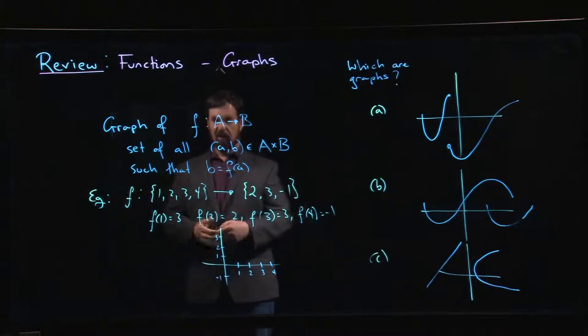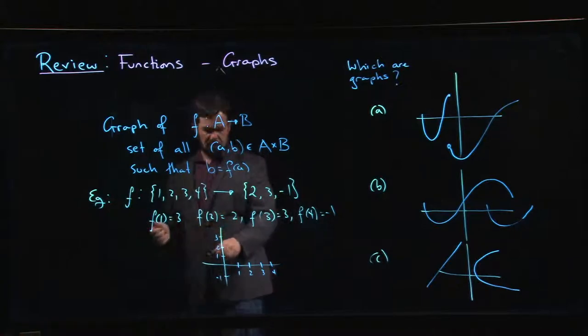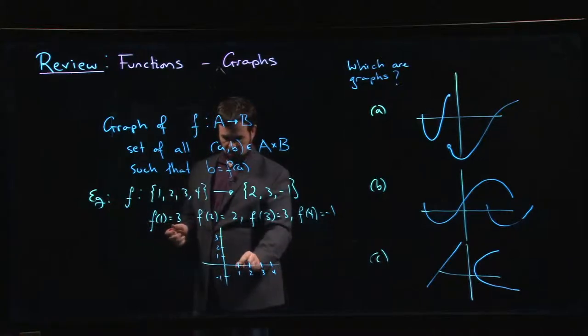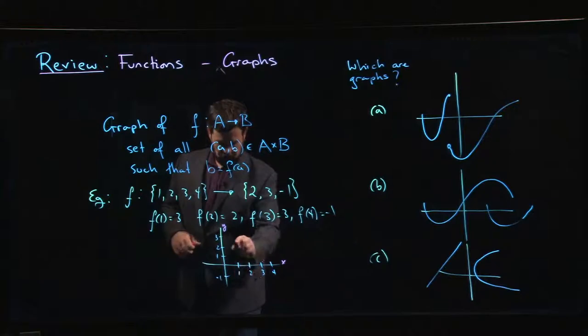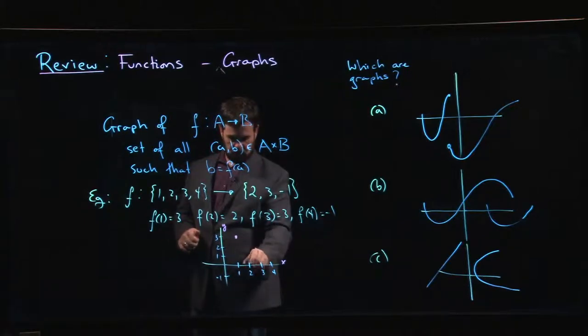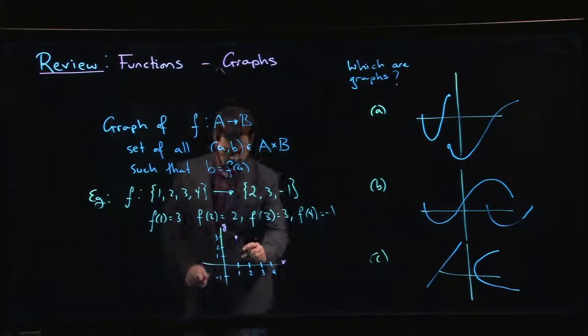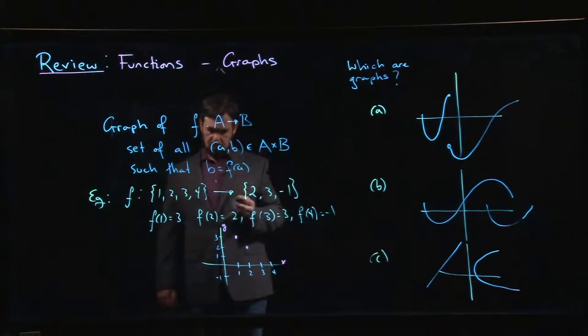Using this idea of the Cartesian plane, here's an example where I would just plot the points and that's going to tell you what the graph is. So if I want f(1) to be 3, I go x is 1—this is my x-axis, this is my y-axis, or A and B if you like—and I plot a point at the coordinates (1, 3). f(2) equals 2, so I go to 2 and I plot a point there. f(3) equals 3.